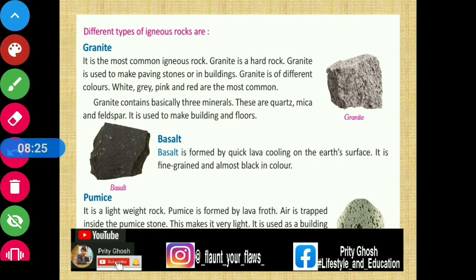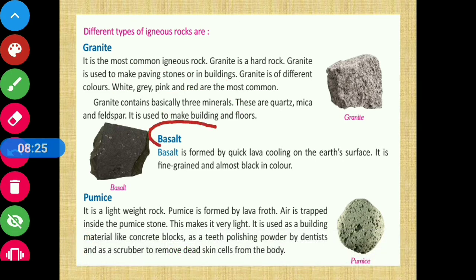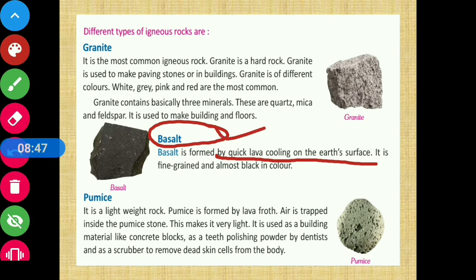Next, we are going to read about basalt. Basalt is formed by quick cooling of lava on the earth's surface. It is fine-grained and almost black in color.